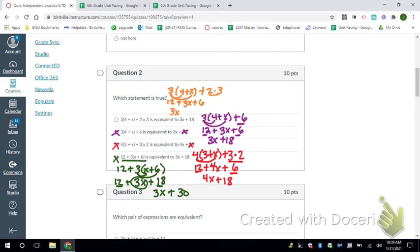So I have my 3x, but then I can combine the 12 and the 6 because they're both positives here. I just add them, so it's 18. So that answer is the first one. All right, there you go, Rams.